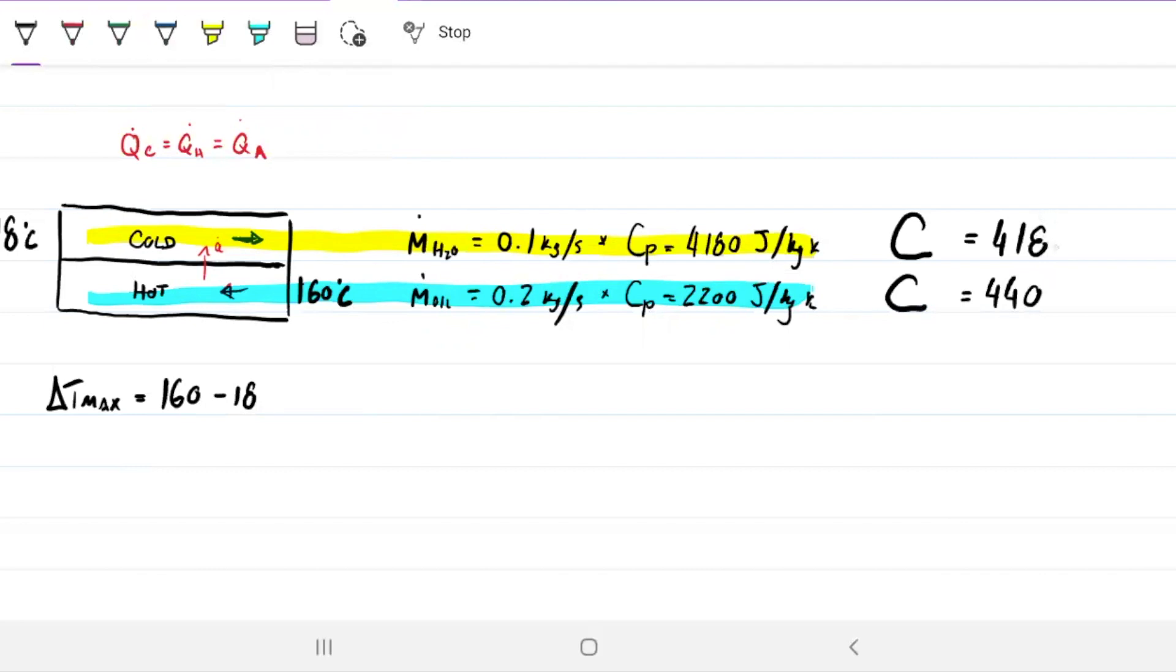Kilograms go away, so we're going to be left with watts per Kelvin or, if you wish, joules per Kelvin seconds. And this is the point in which we determine which one is the maximum, which one is the minimum. It's as simple as that. Which one is greater? Well, this one is greater, so this one therefore is max. This one is smaller, so this therefore is min.